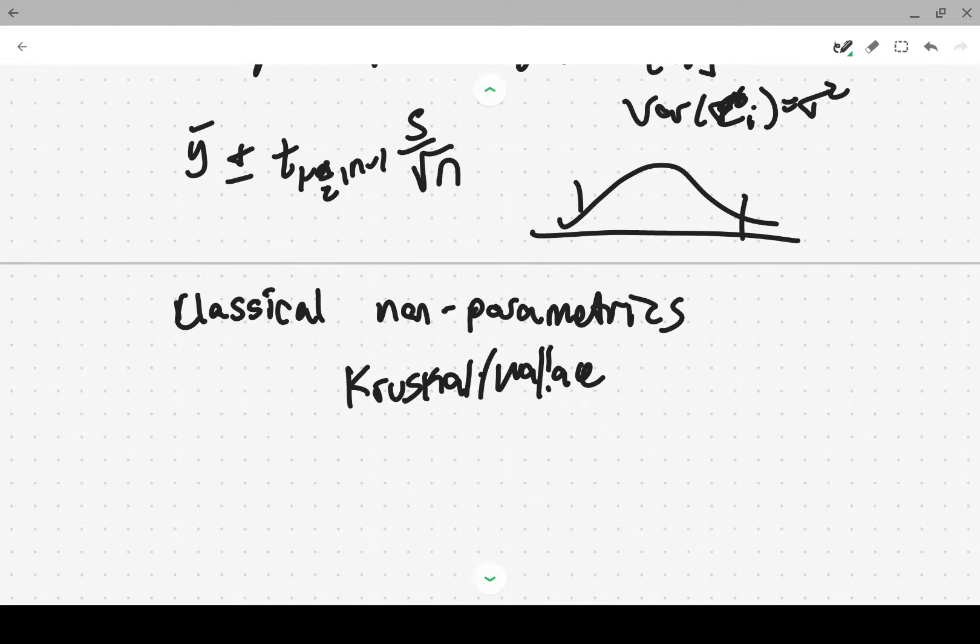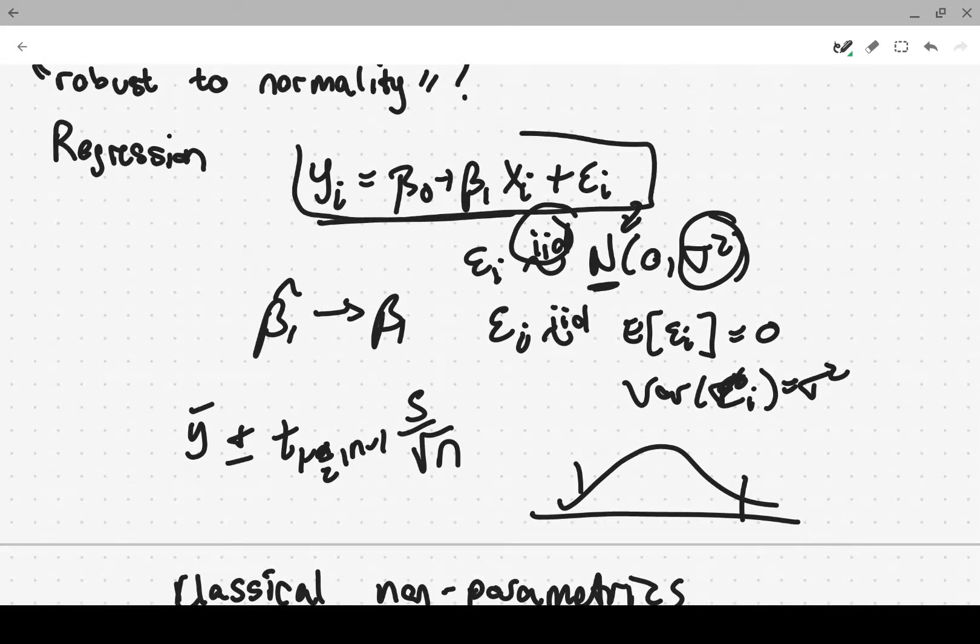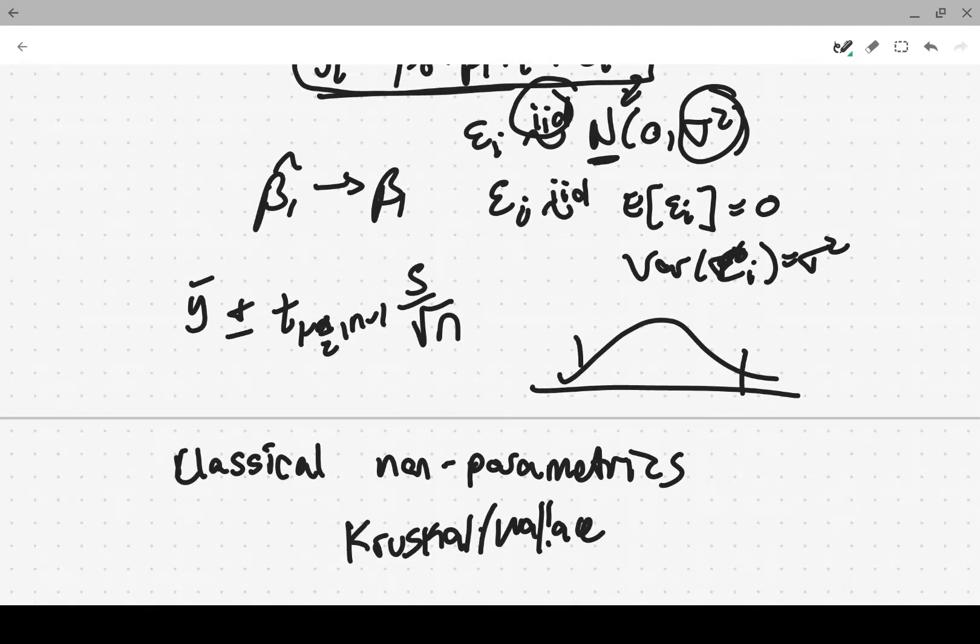And then you have a hypothesis test with the correct error rate without having to make any sort of appeal to normality that applies very broadly. Of course, when you do this, you pay for something with it and you pay for some interpretability, right? These models that we have up here, like this linear regression model has this great interpretability. So part of the benefit of the modeling is that interpretability. So if you go all the way to these classic non-parametric techniques, you pay with a little bit of interpretability.